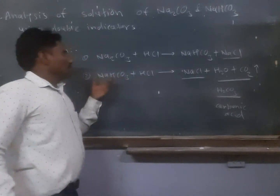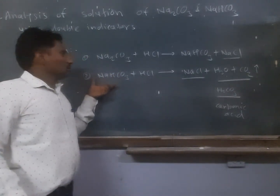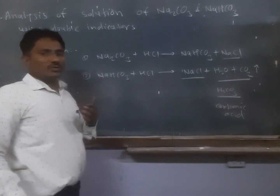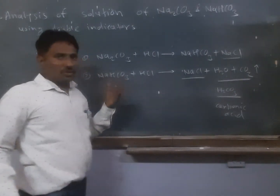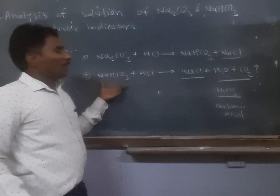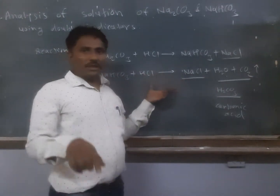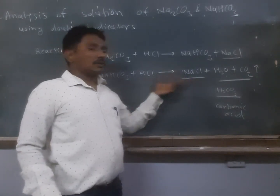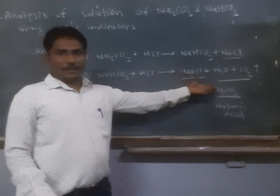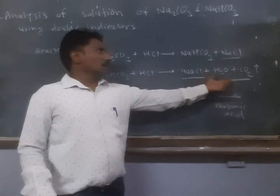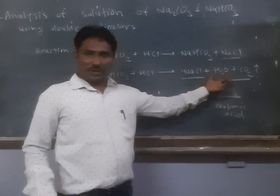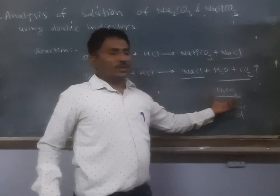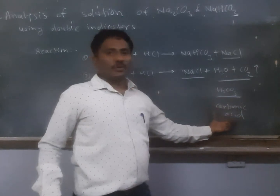In the same mixture, if we add methyl orange, this indicator is sensitive to H⁺ at low concentration, so it will show yellow color. Then if we continue to add HCl, complete neutralization takes place and we get NaCl plus water plus CO₂. This CO₂ and water is nothing but H₂CO₃, which is carbonic acid.